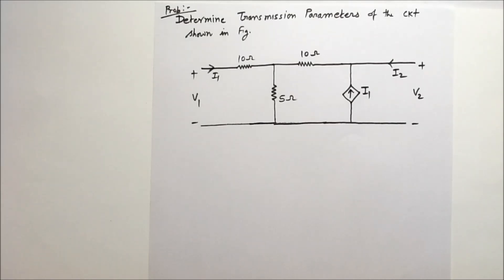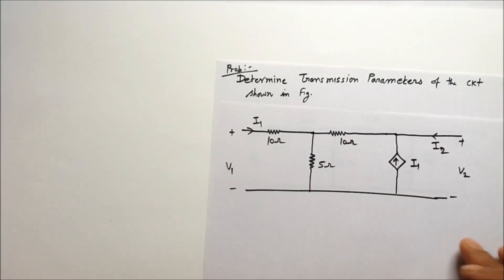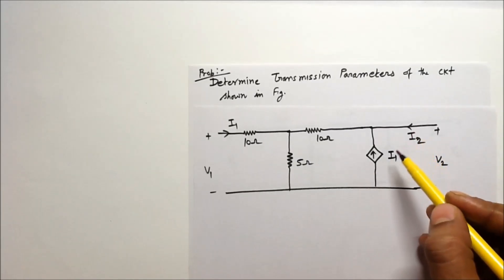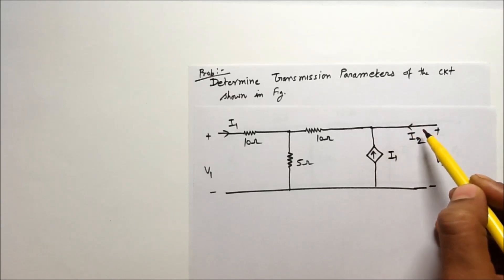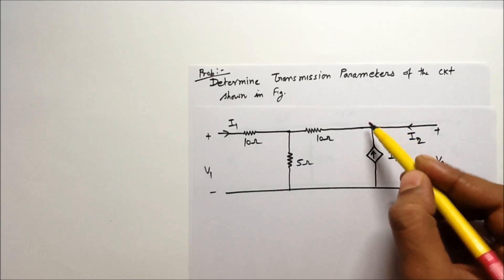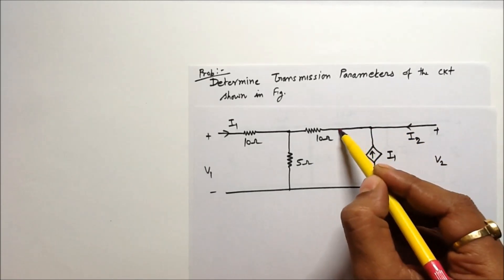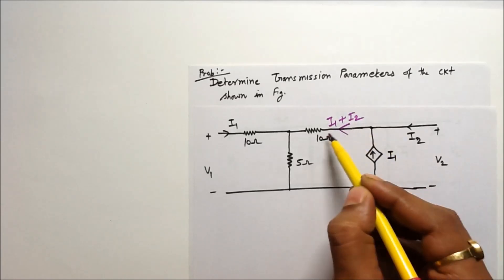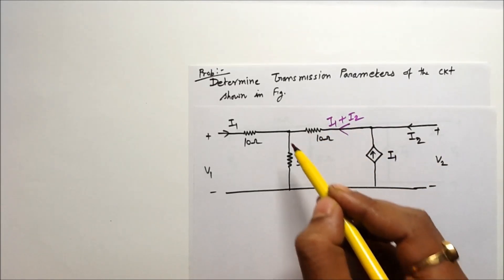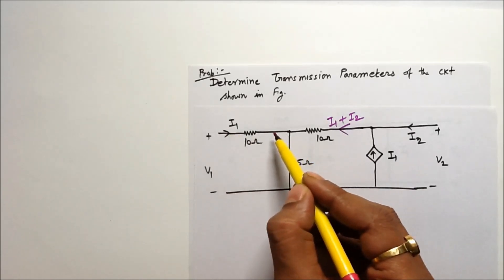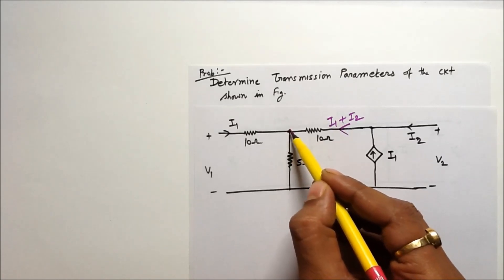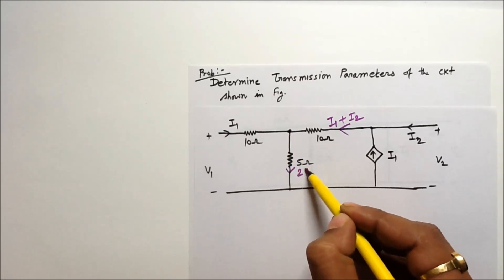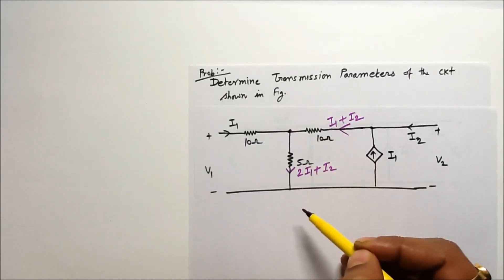Let us find out the solution of this problem. We have to find out the transmission parameters of the circuit shown in the figure. Current I2 is flowing in this way, current I1 is flowing in this way. If you apply KCL at this node, you can say that current I1 plus I2 will flow in the 10 ohm resistance, and current 2I1 plus I2 will flow in this 5 ohm resistance.